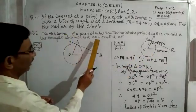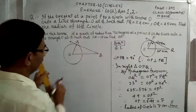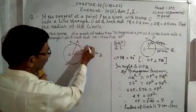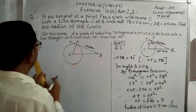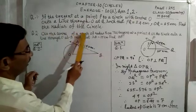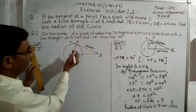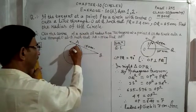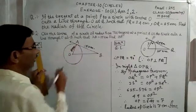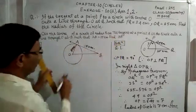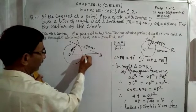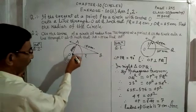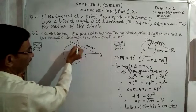Similar to the previous question, we know the radius and tangent at the point of contact are perpendicular. So angle OAB equals 90 degrees, because the radius OA is perpendicular to the tangent AB at the point of contact A. Therefore this is a right triangle.